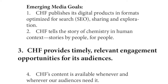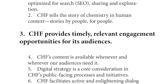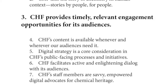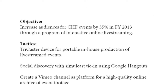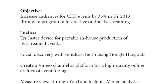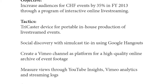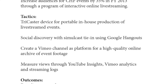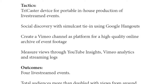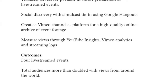CHF adopted seven goals for its digital media strategy in the summer of 2012. For example, goal number three states: 'CHF provides timely, relevant engagement opportunities for its audiences.' One objective under this goal was to increase audiences for CHF events by 35% in FY 2013 through a program of interactive online live streaming. Identified tactics included using a TriCaster live streaming device for portable in-house production, taking advantage of social discovery with simulcast tie-in using Google Hangouts, creating a Vimeo channel as a platform for a high-quality online archive of event footage, and measuring views through YouTube Insights, Vimeo Analytics, and streaming logs.